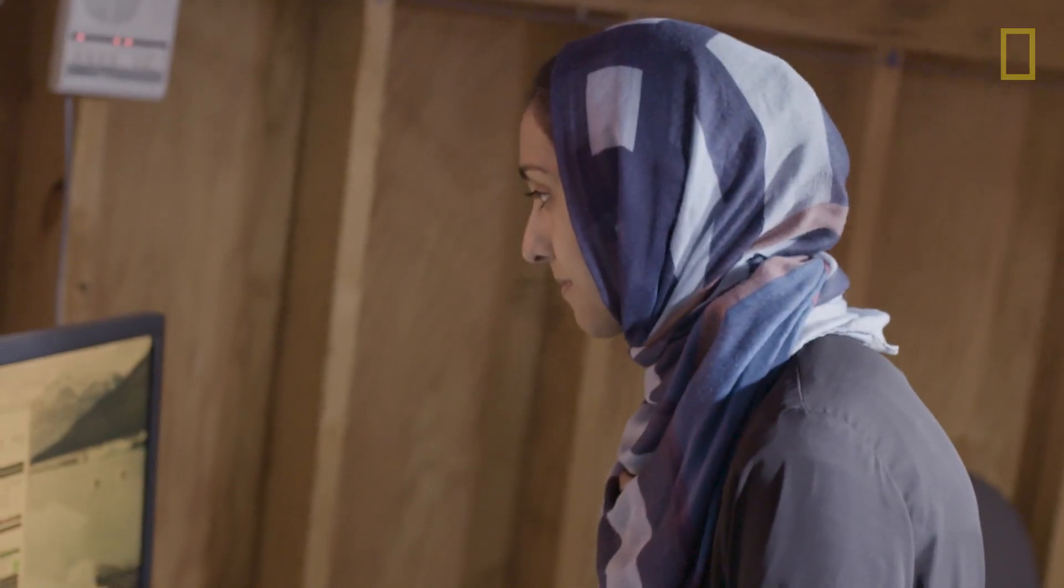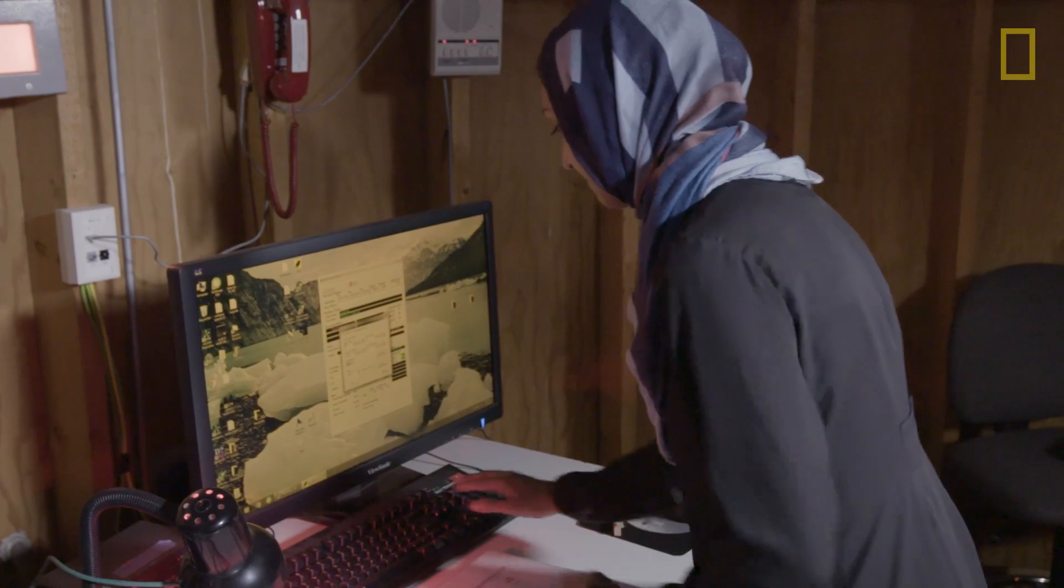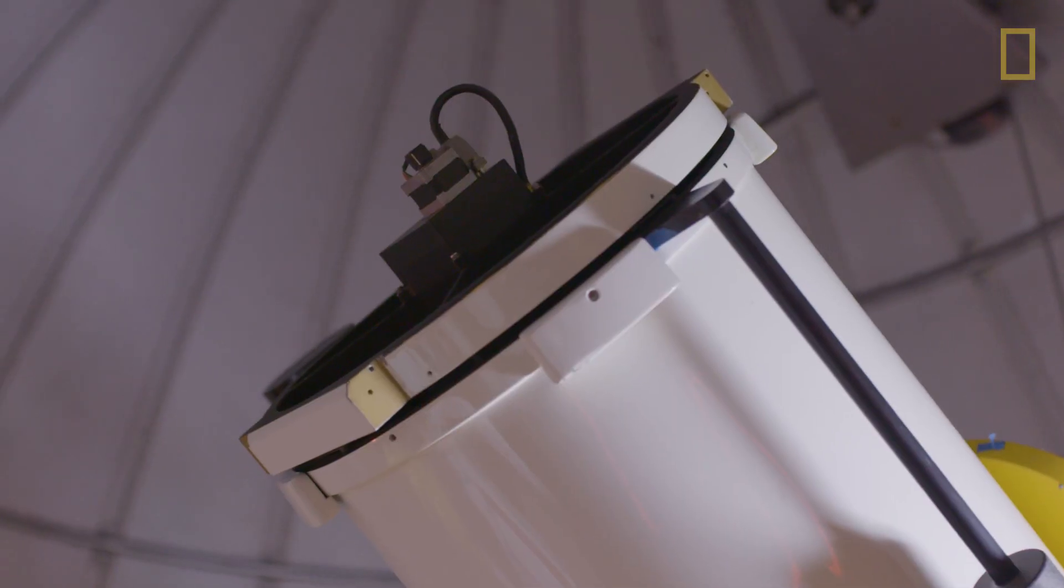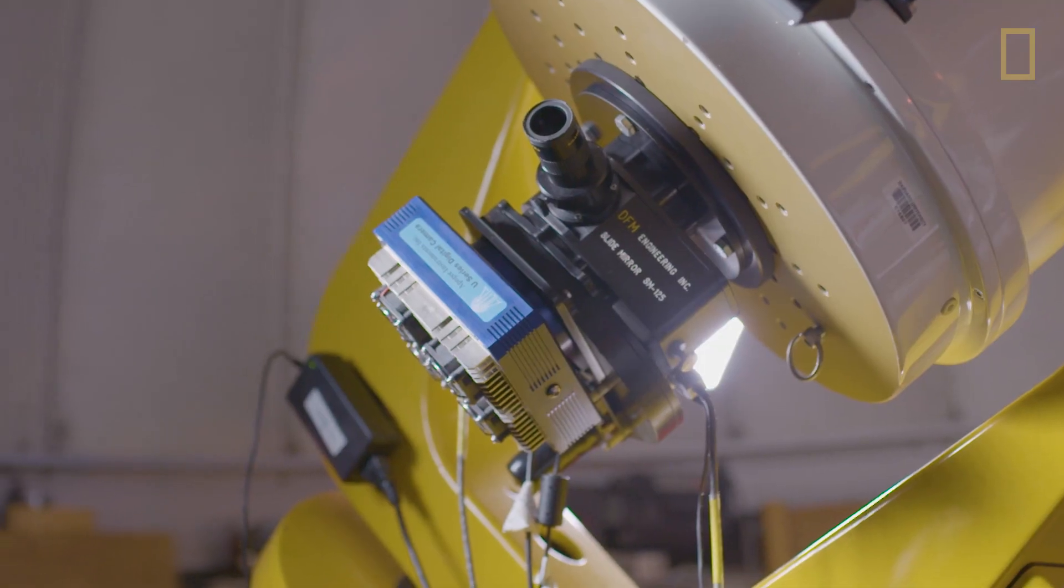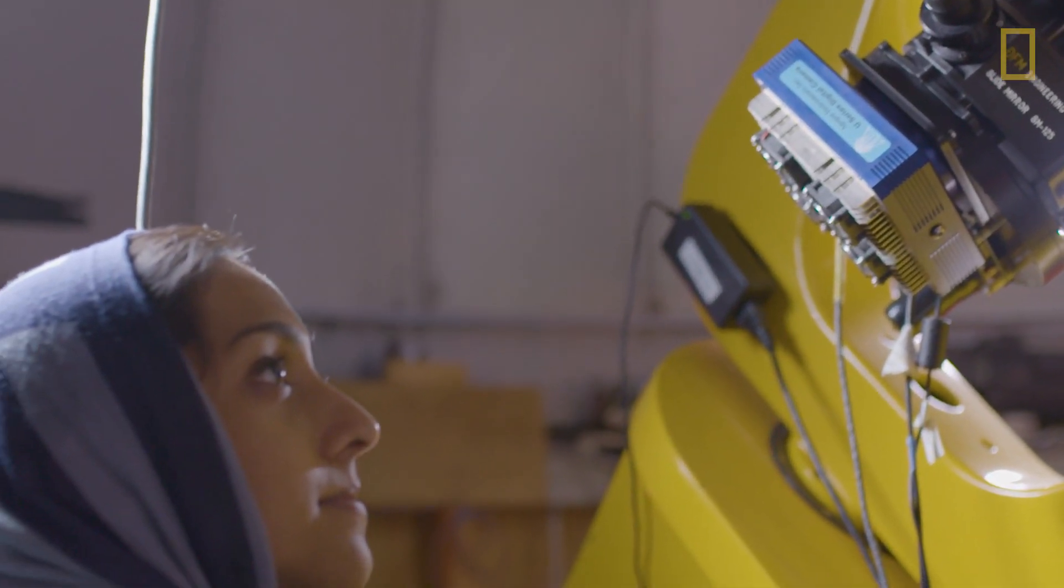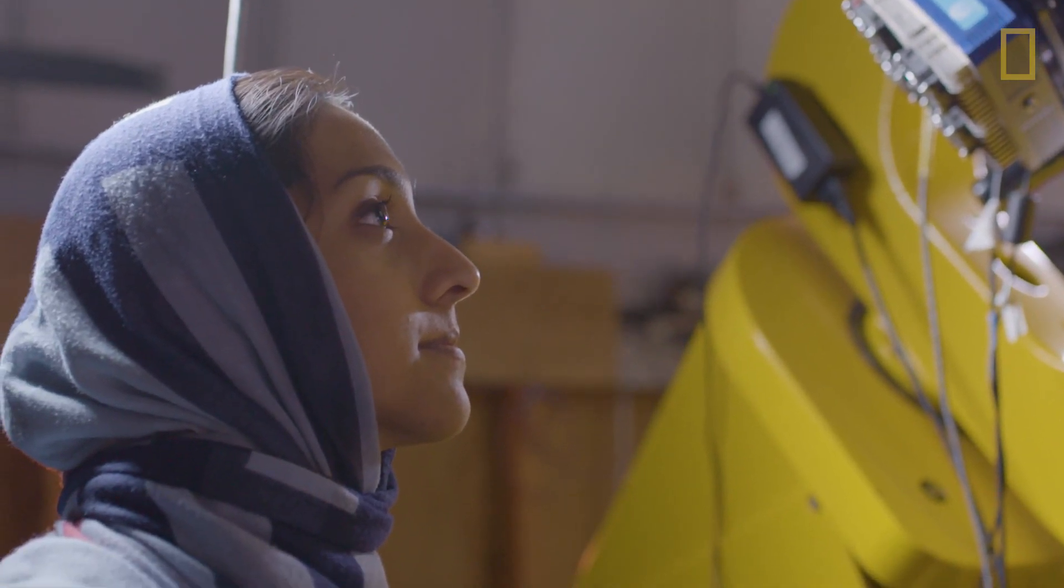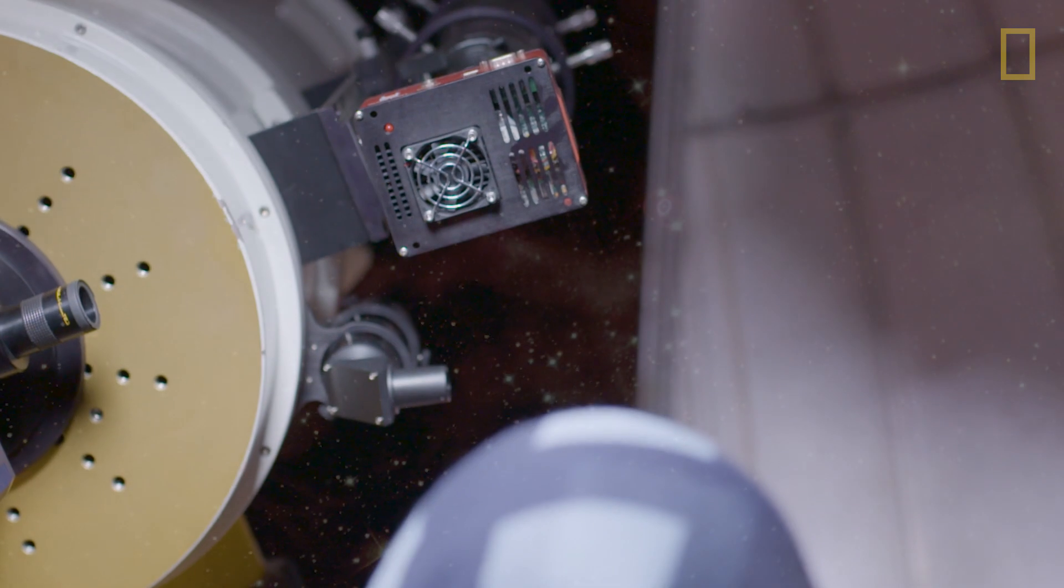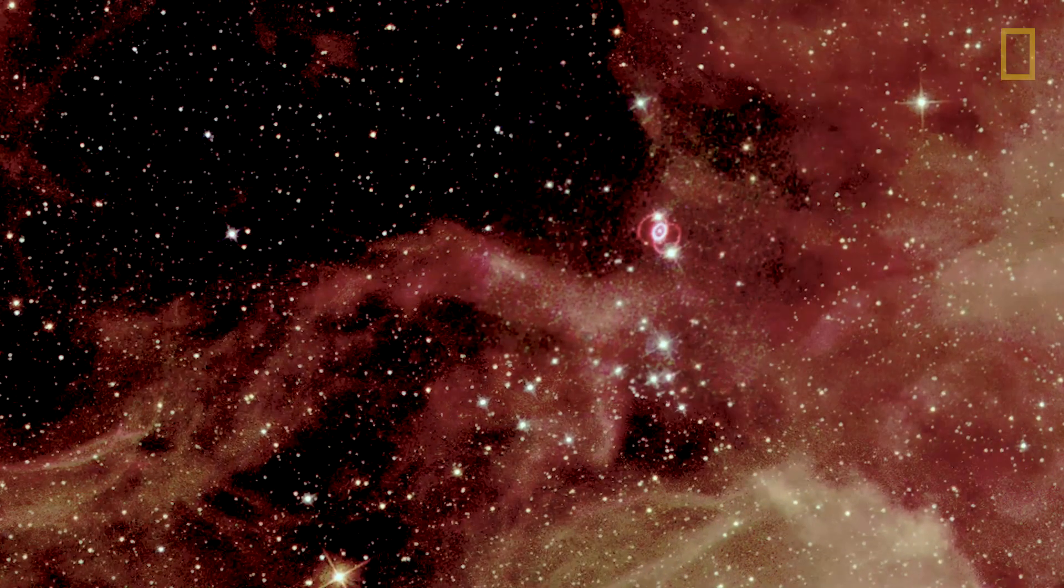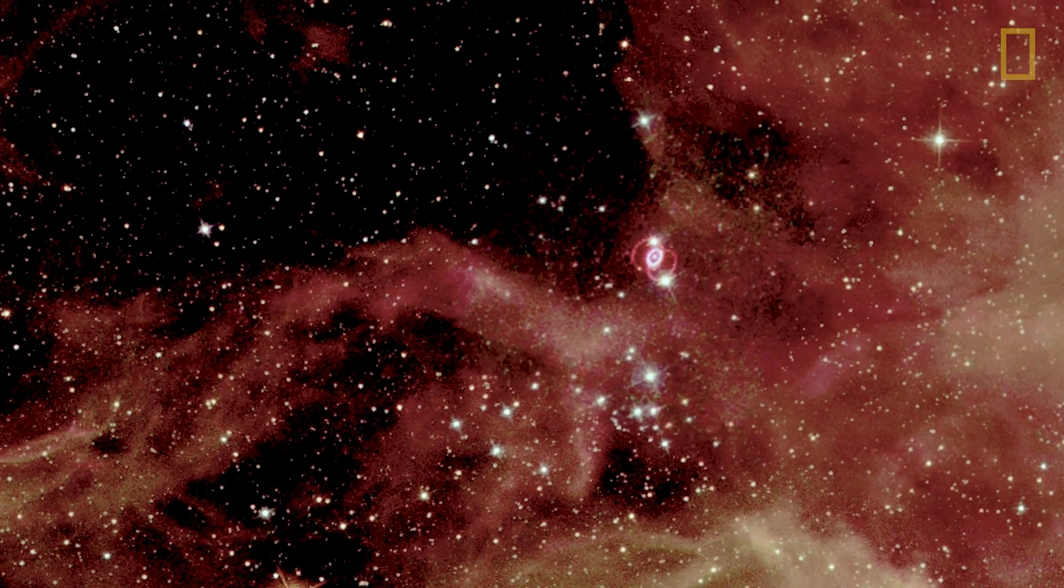This is an advanced telescope, and we use a computer to control where it points. It has attached to it something that's very similar to a camera. So we point the telescope to whatever we're interested in observing. The telescope will start to collect the light into this device, and we can use that light that we collect to take a picture of what the telescope is looking at.